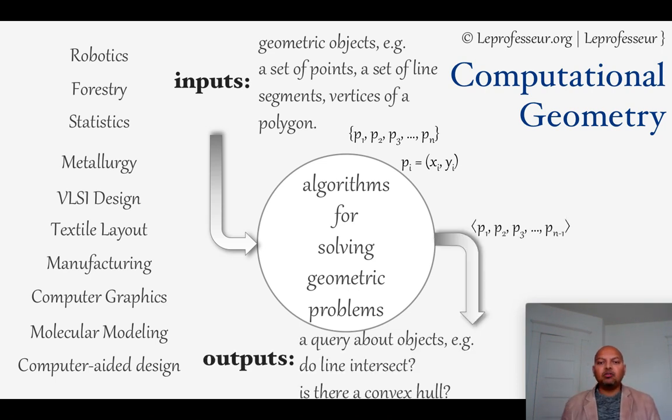And what is the output? Output, typically we are interested in some kind of a question or query about these objects. For example, whether the line segments intersect with each other, or if you have been given a set of points, whether there is a convex hull kind of object that exists, or some other kind of questions related to that. So essentially the output would be some sort of answer for which query you are looking for.